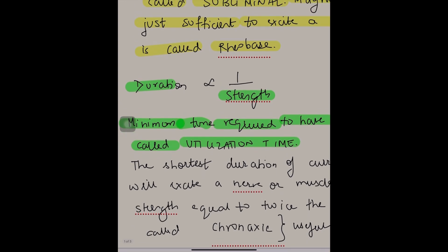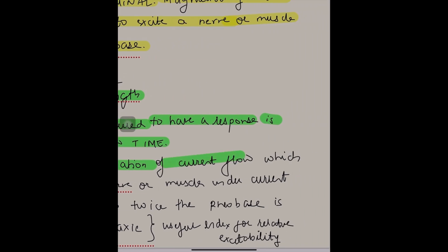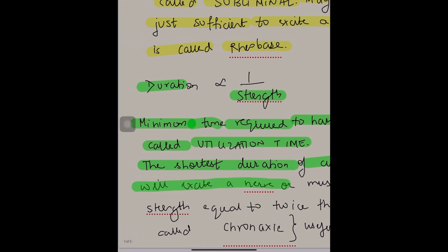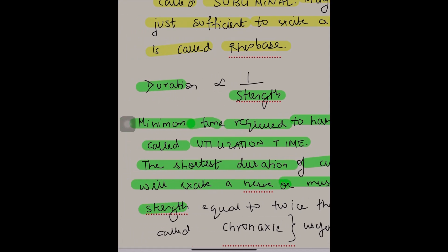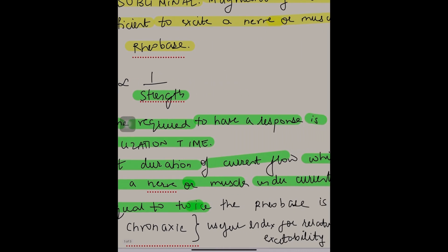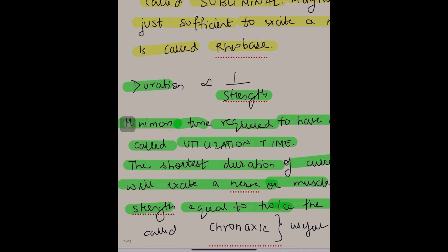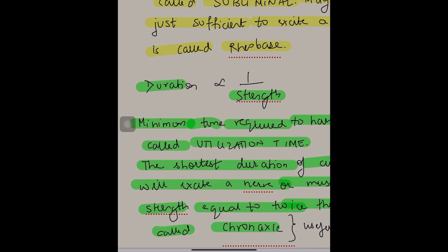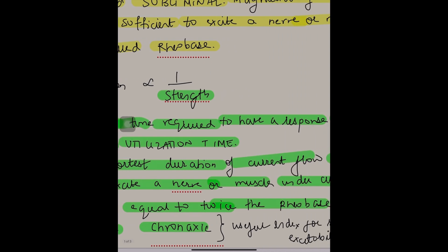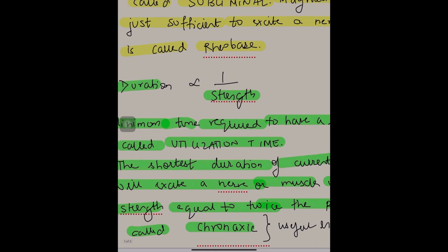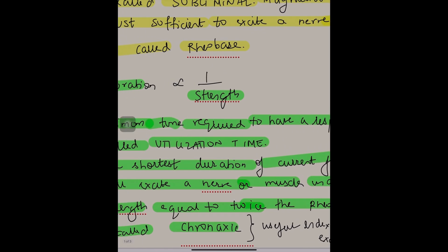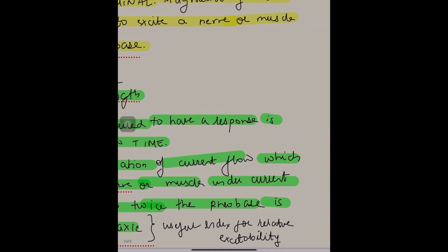So you first define utilization time. The shortest duration of current flow which will excite a nerve or muscle under current strength equal to twice the rheobase is called chronaxy. Chronaxy is a useful index for relative excitability.